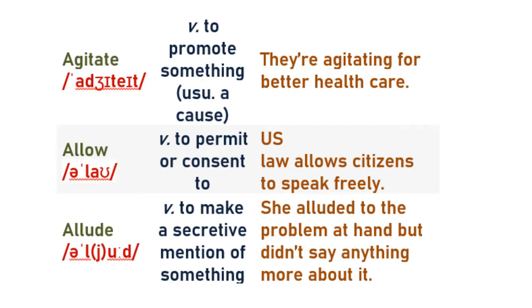In the example, she did not directly mention the problem she was going through, even though it was kind of evident. So 'allude' captures the idea of hiding something — the secretive motive is evident, but nothing is said directly about it. It's like saying something without saying it fully.